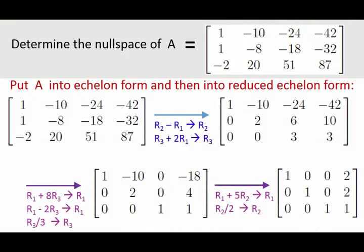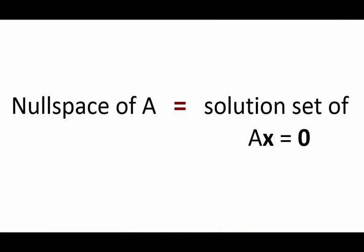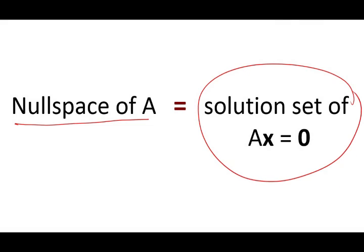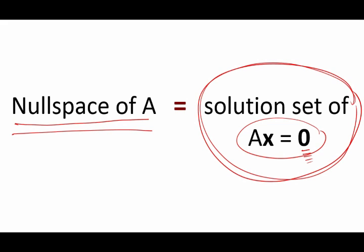We will now determine the null space of the same matrix A. To determine the null space, we not only need echelon form but reduced echelon form. The reason we need reduced echelon form is that by definition, the null space of A is exactly the solution set of Ax = 0. That means we need to solve Ax = 0 in order to find the solution set, because that is by definition the null space of our matrix A.